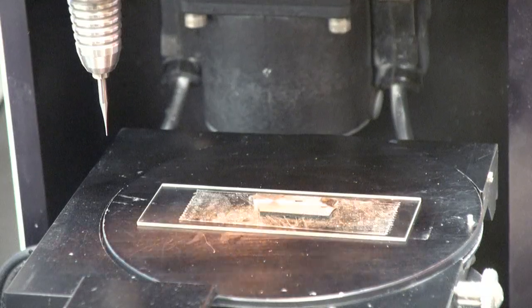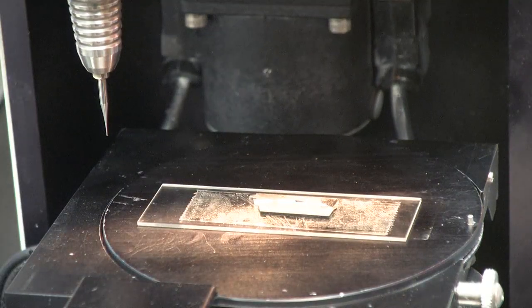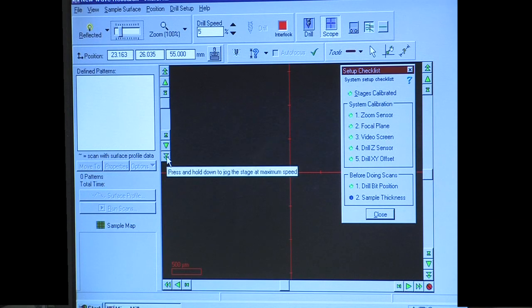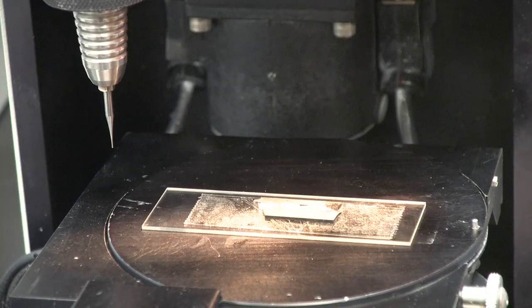We use the reflected light source when sampling otoliths and the controls can be found in the upper left of the screen. Adjust the light to an appropriate level and manually move the Z stage down closer to the sample until it is in focus.